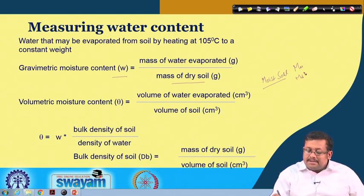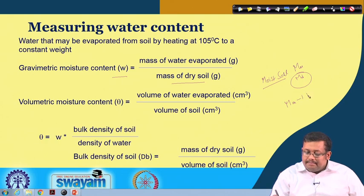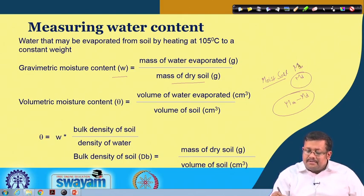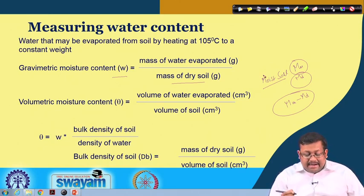We already know the mass of dry soil, that is m_d, and mass of water evaporated can be calculated by m_m minus m_d. If we subtract the weight of dry soil from the weight of moist soil we get the mass of water evaporated. This is one of the major methods of measuring water content.